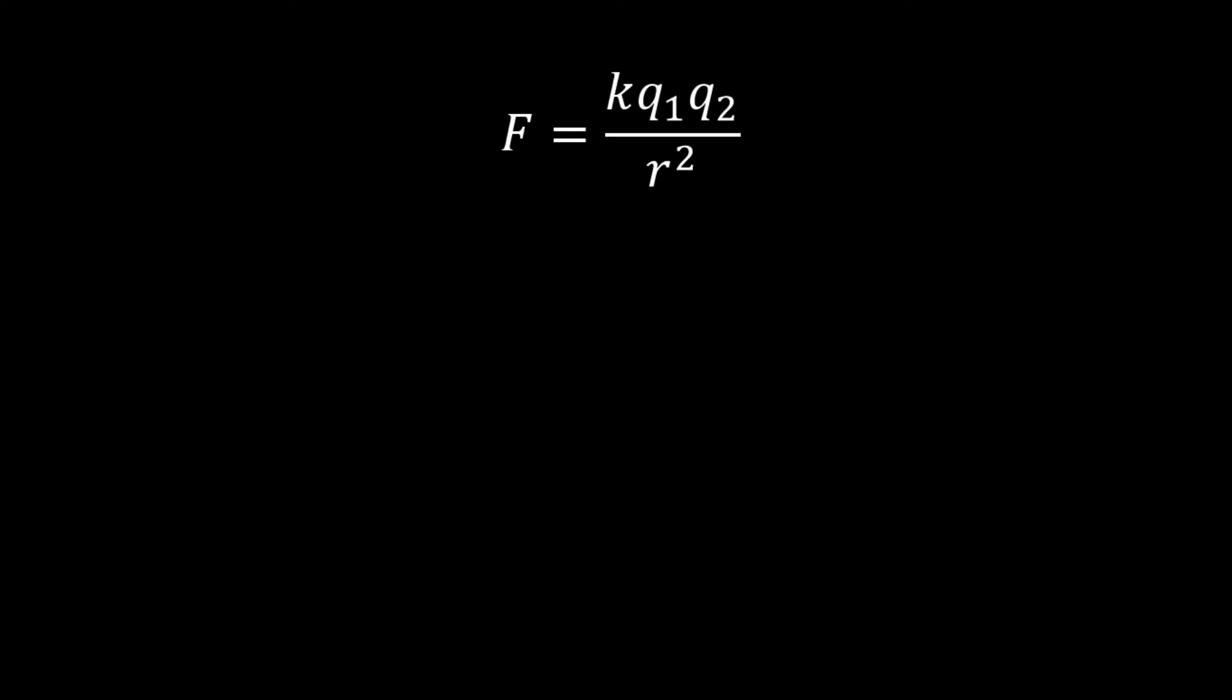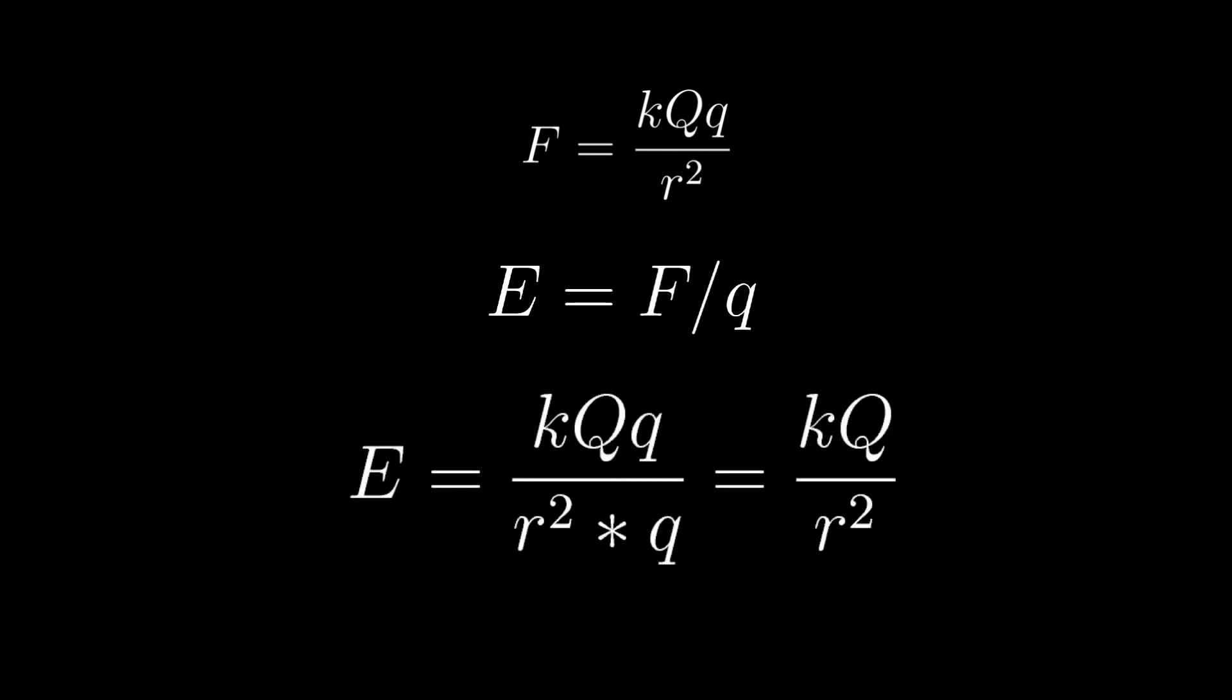In our scenario, let's let q1 be the source charge and we'll call it capital Q, and let q2 be the test charge and we'll let that be lowercase q. So then our equation looks a little something like this. The force becomes k capital Q times lowercase q over r squared. So electric field is defined as the force per charge. If we plug our expression for force and divide by q, what we're left with after doing a little bit of simplification is that the strength of an electric field equals k times capital Q over r squared.